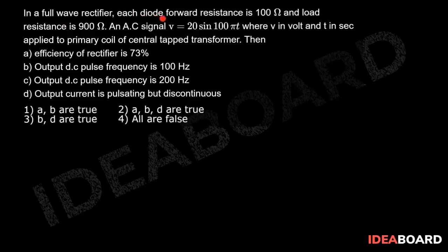In a full wave rectifier, each diode forward resistance is 100Ω and load resistance is 900Ω. An AC signal V = 20sin(100πt), where V is in volts and t in seconds, is applied to the primary coil of a center-tapped transformer.